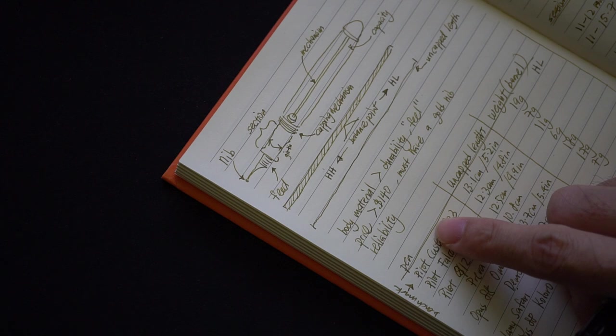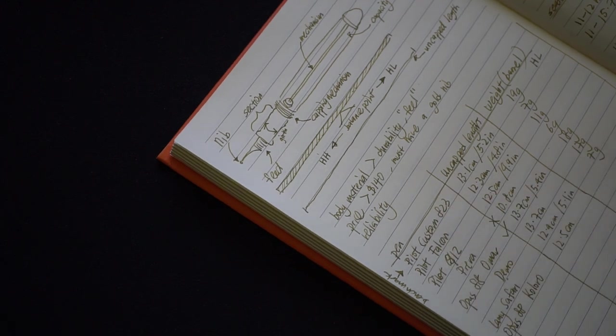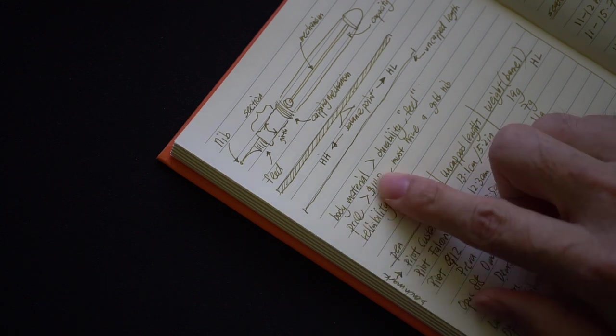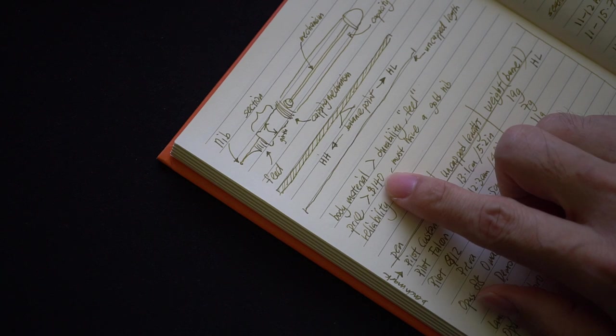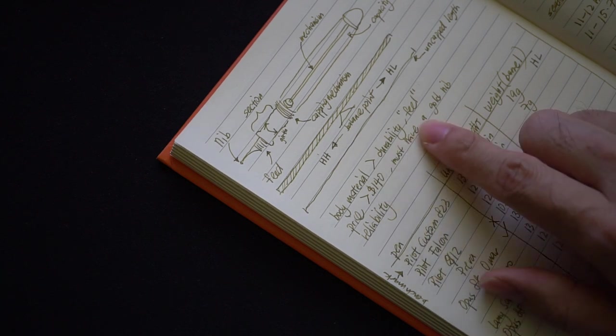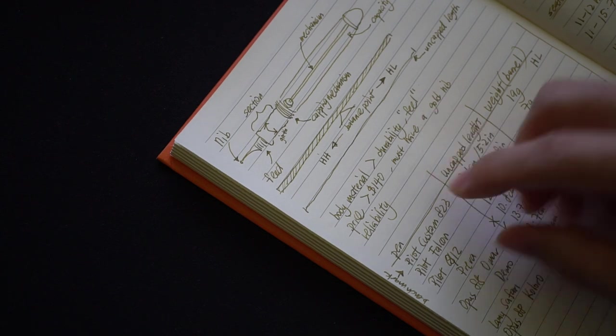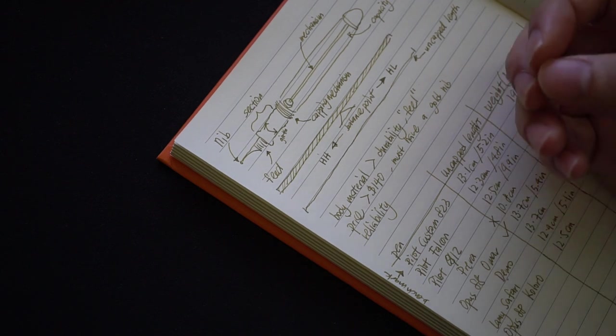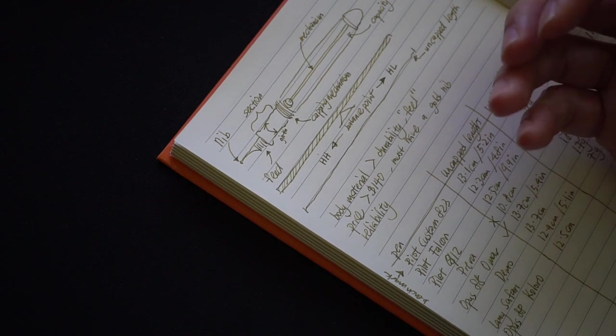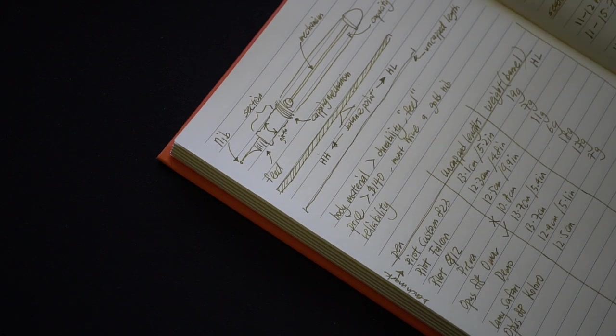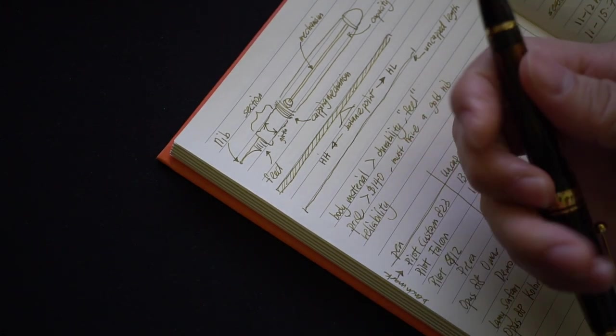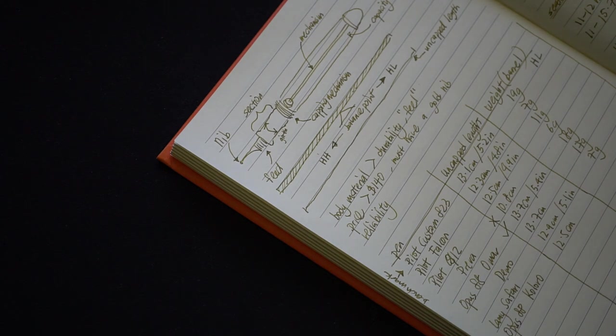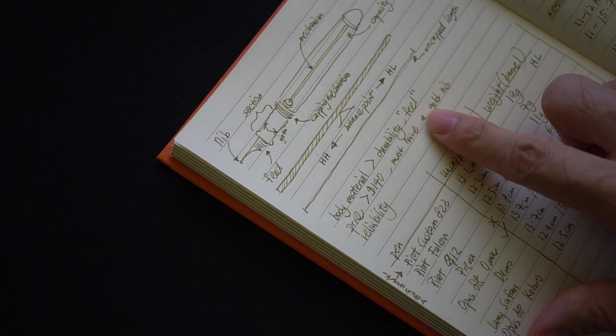The other parts of the pen which I think you should take note of would be things like the body material. What material is the body made out of? And that actually translates to the feel of the pen. We all know that there are some pens out there that feel immediately when you hold it in your hand, it feels like that's a quality pen. For example, this 823, the plastic or the resin feels expensive. So durability and feel.